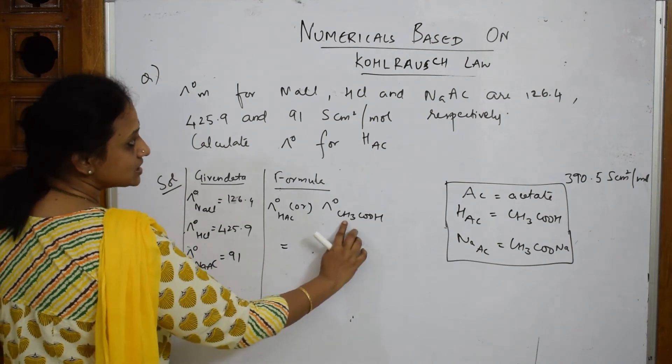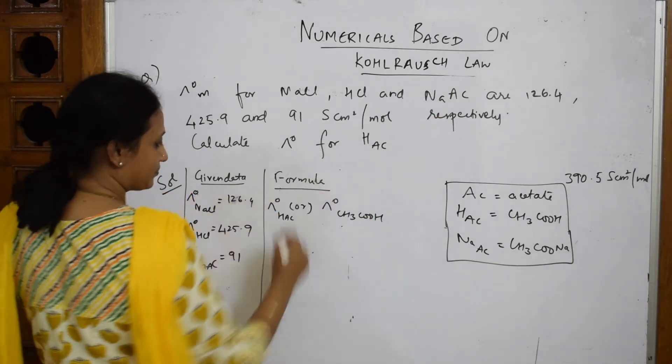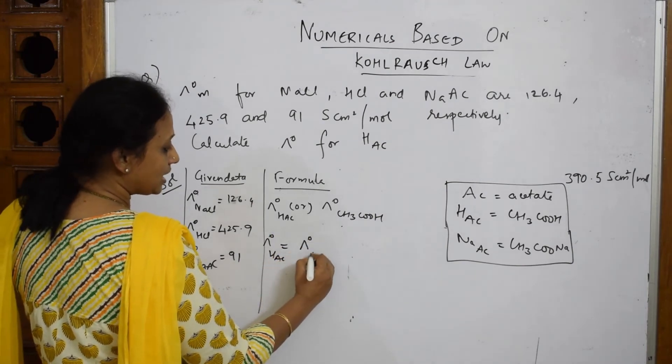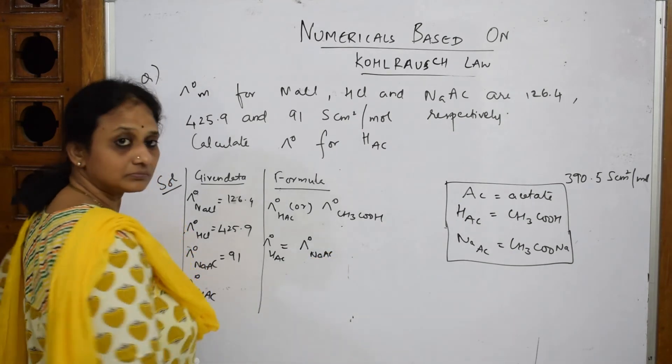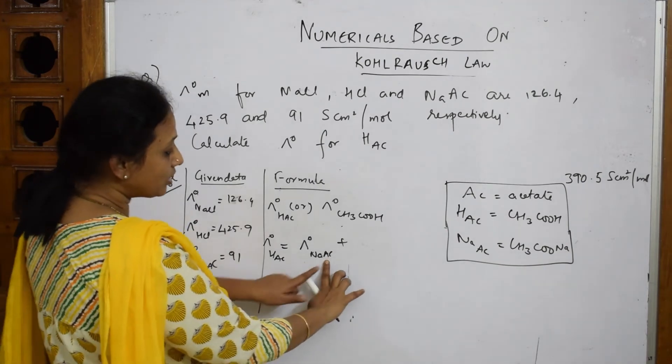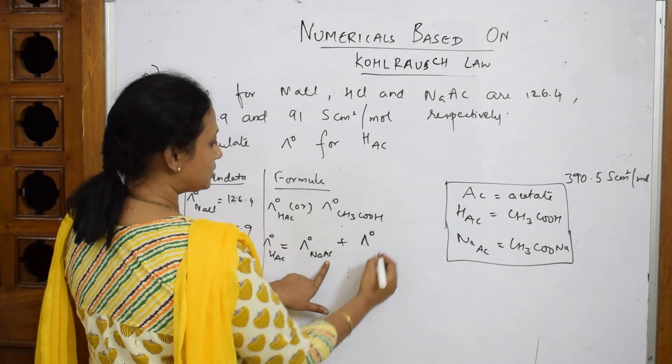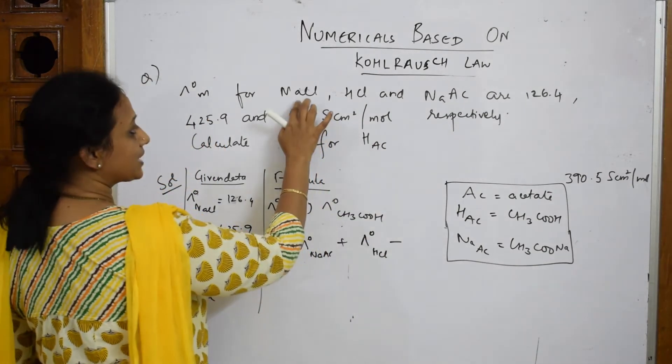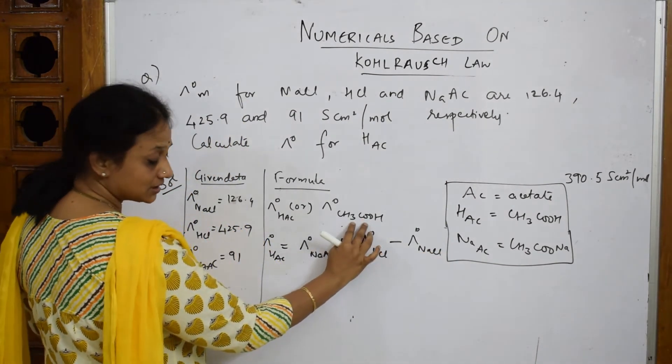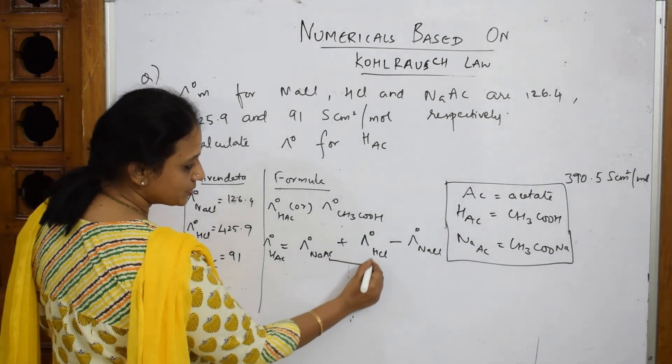Now what should I add? First see what the salt form of this is. The salt form of this is NaAc. Write down: lambda not HAC equals lambda not NaAc plus - already in this acetic acid, acetate ion is already ready. I require one more which has H, that is HCl - then lambda not HCl. Now what should I subtract? I have to subtract NaCl. Why? We already said earlier, we require acetic acid, so acetate is already there, H⁺ is already there. What should be subtracted from both of them? NaCl should be subtracted, so I subtracted that.